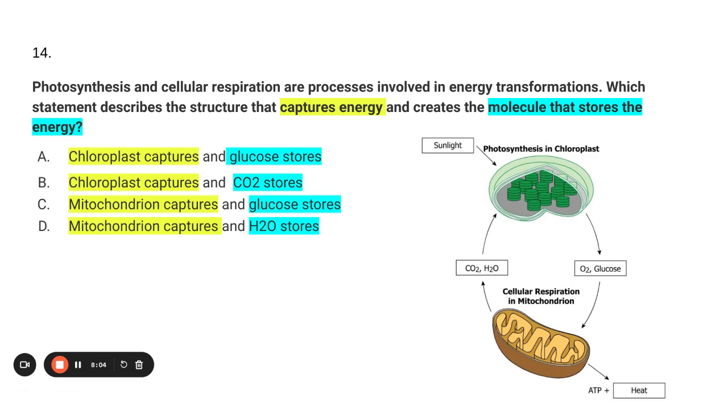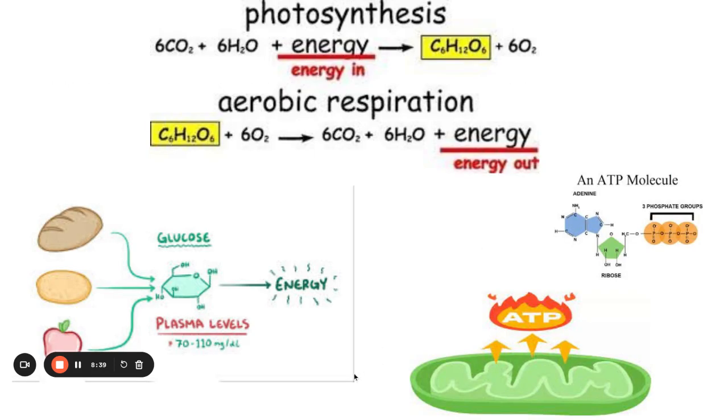So now we have to decide which molecule stores the energy. Is it glucose that stores the energy or is it carbon dioxide that stores the energy? Well, if you look at the diagram, coming out of the chloroplast is glucose and oxygen, not glucose and carbon dioxide. So carbon dioxide is out. Plus we know that glucose stores energy. It is a monosaccharide. It is the main energy molecule used to make ATP or our energy currency that we use to function.